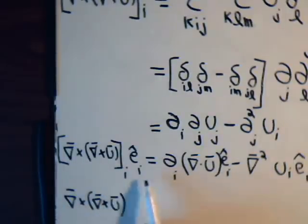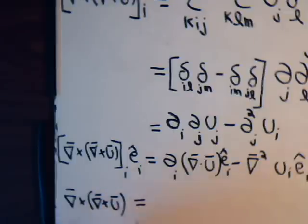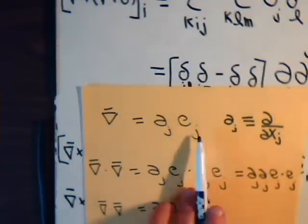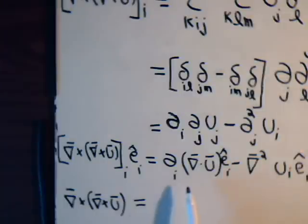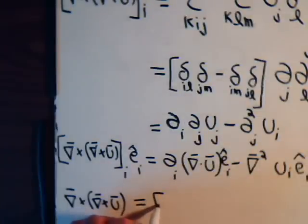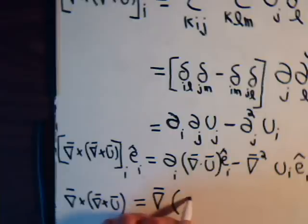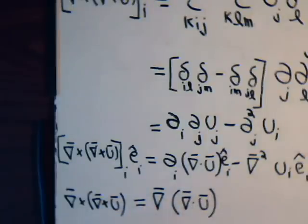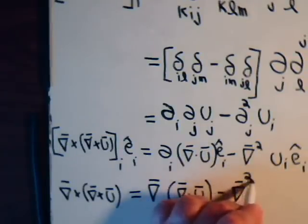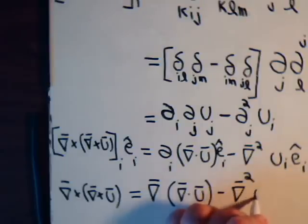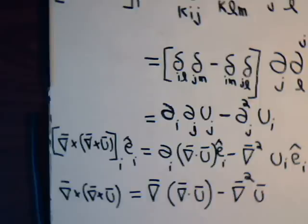This is how we have been writing vectors ever since the first video. And this equals del partial i ei, but that is the del operator. These are dummy indexes, of course. This could be z, z, l, l, whatever. Here, in this case, happens to be ii. But that gives the del operator. Then we have del dot the vector u. Then we have minus del squared, and that's the vector u. So there is our identity.